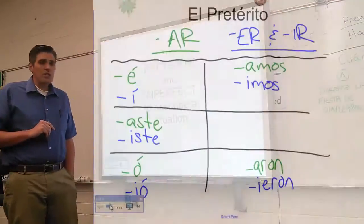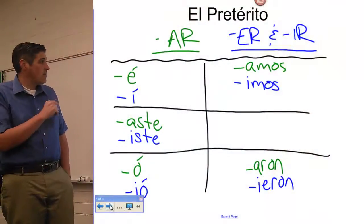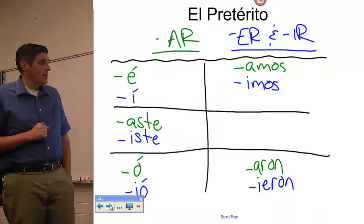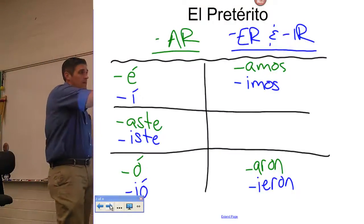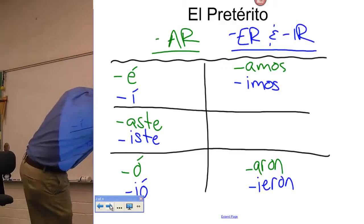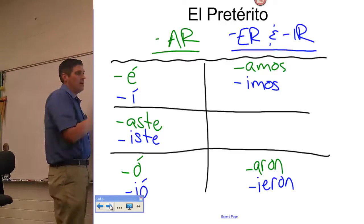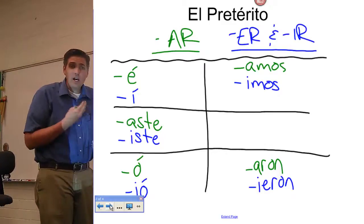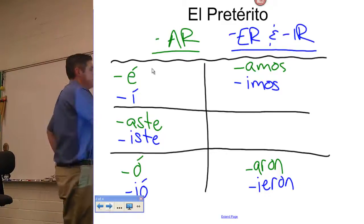Before we do that, let's just take a quick glance at the preterite. You'll recall that the preterite has these endings, the AR are in green. So like a verb like hablar, and you want to say I talked. Yesterday I talked with my friend, it would be hablé.